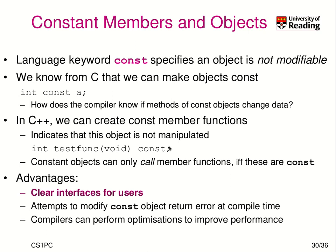Therefore in C++ you can create so-called const member functions. They indicate that the object is not manipulated inside the function — it's basically a bit like a pure function, though pure functions are a bit more strict. Here we have declared 'testFunc' to be a const function, meaning any change you try to make to any data member inside this function will lead to a compiler error. If you have a constant object, you can only call member functions declared as const. The advantage is clear interfaces for users, compile-time errors when modifying const objects, and potential compiler optimizations for performance.